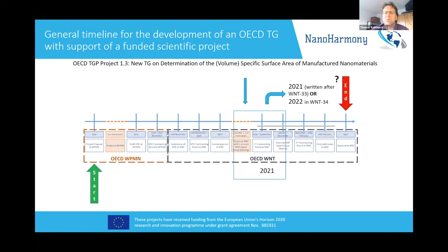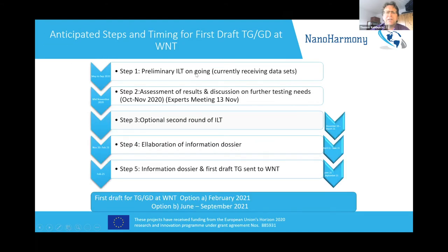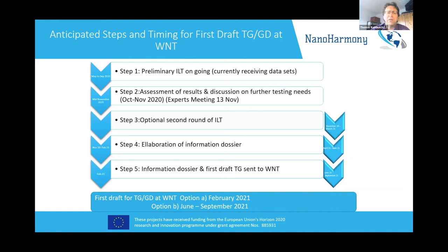The volume specific surface area project will be presented and finalized at WNT's 33rd or 34th meeting in 2021. The test guideline development started a long time ago. From May to September 2020 the first interlaboratory testing was ongoing, followed by October to November 2020 for assessment of results and discussion on future testing needs. An optional second interlaboratory round is foreseen if needed from December 2020 to March 2021, with elaboration of the information dossier and a first draft of test guidelines sent to WNT either at the end of 2021 or by 2022.